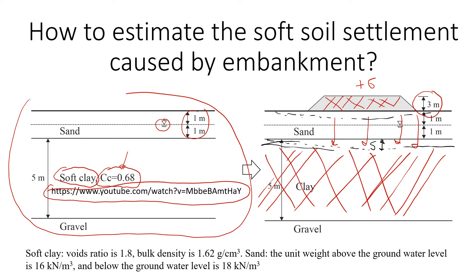We are given the void ratio of this clay: 1.8. We are also given the bulk density of the clay: 1.62 grams per cubic centimeter. We're also given information about the sand. The unit weight of sand above the groundwater level is 16 kN/m³, and the unit weight of sand below the groundwater level is 18 kN/m³. This makes sense because when sand is saturated, its unit weight is a bit greater than when it's dry or only partially saturated.